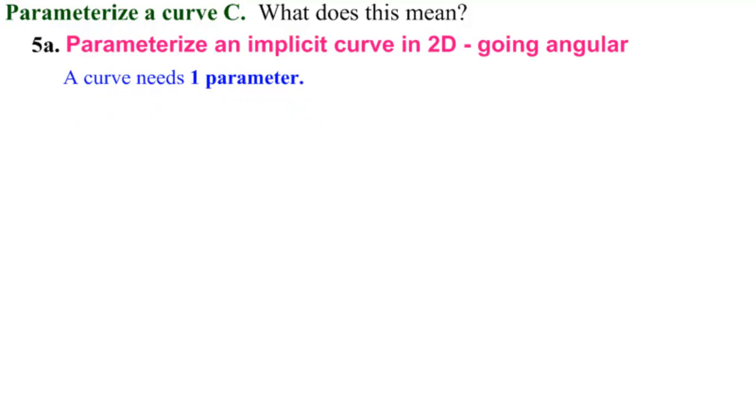I want to emphasize here that parameterizing is not a change of variables. So it's not like we're going from rectangular coordinates to polar coordinates. We're searching for a parameter. That's what we're doing.